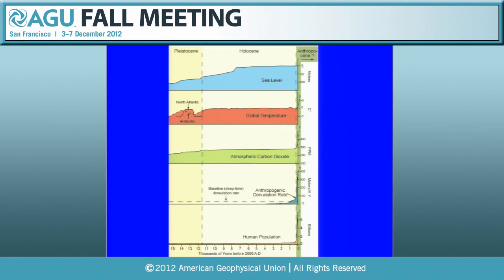The idea is that in the last couple of centuries, sometime in that time, the world has begun to change — and it's begun to change very significantly, but not exactly simultaneously. Human population has gone up markedly in that last couple of hundred years. Denudation rate has increased, but slightly more irregularly. CO2 has shot up since about 1800. Temperature has begun to go up. Sea level has barely budged yet, but future centuries, we'll see what will happen.